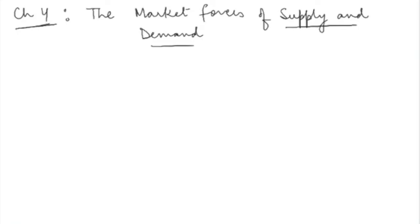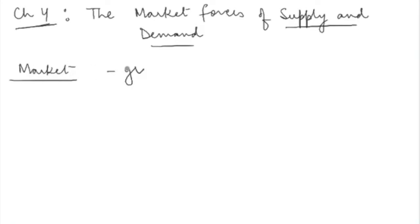If there is any change in demand or any change in supply, how does it affect the market equilibrium? That's precisely what we are going to cover in this chapter. But before we come to demand and supply, it is first important to understand what we mean by a market. Supply and demand are behavior of people — the demand side primarily comprises consumers and the supply side comprises producers. A market is nothing but a group of buyers and sellers of a particular good or service.